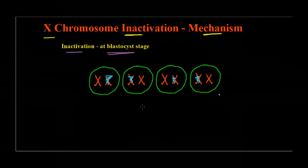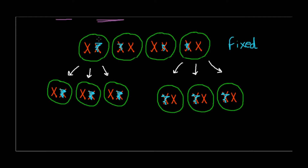The interesting thing is that once this inactivation occurs, the pattern is fixed — once it is inactive it is going to remain inactive throughout adult life. Not only that, whatever daughter cells are produced from this cell would also follow the same inactivation pattern. That means if in a cell the maternal chromosome has undergone inactivation, whatever daughter cells are produced after cell division will also have the inactivated maternal X chromosome. Similarly, if it was the paternal X chromosome that had undergone inactivation, all daughter cells produced would also have the paternal X chromosome inactivated.